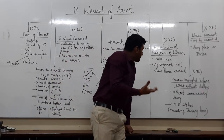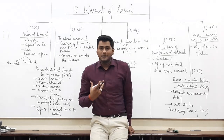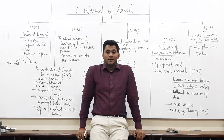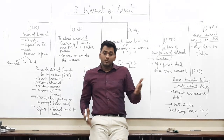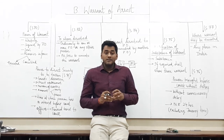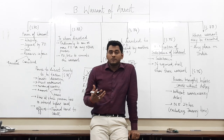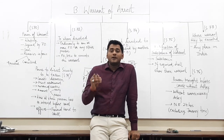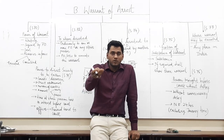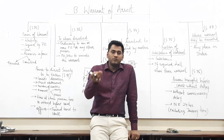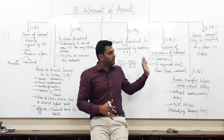Now we will move to Section 75 — notification of substance of warrant. You must have seen in Hindi movies that a police officer arrives at the door of a person and tells him that he is there to arrest him, and the person asks to see the warrant. Section 75 requires that the police officer or the person executing the warrant will tell the substance of the warrant to that person, and if required, may also show the actual warrant for reference. The person being arrested will see the contents of the warrant and submit to custody.